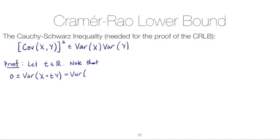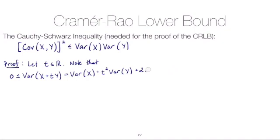We have the variance of X plus tY, where t is a real number. That equals the variance of X plus t squared times the variance of Y. Since we haven't assumed X and Y are independent, we also have to deal with the covariance term, which is two times the covariance of X and tY. Since t is a constant in one of the arguments of the covariance, it comes out, giving us two times t times the covariance of X and Y.